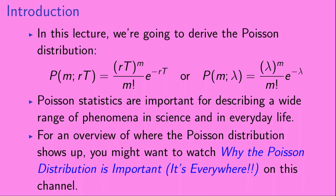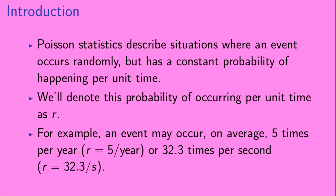For an overview of where the Poisson distribution shows up, you might want to watch 'Why the Poisson distribution is important — it's everywhere' on this channel. Poisson statistics describe situations where an event occurs randomly but has a constant probability of happening per unit time. We'll denote this probability of occurring per unit time as r.